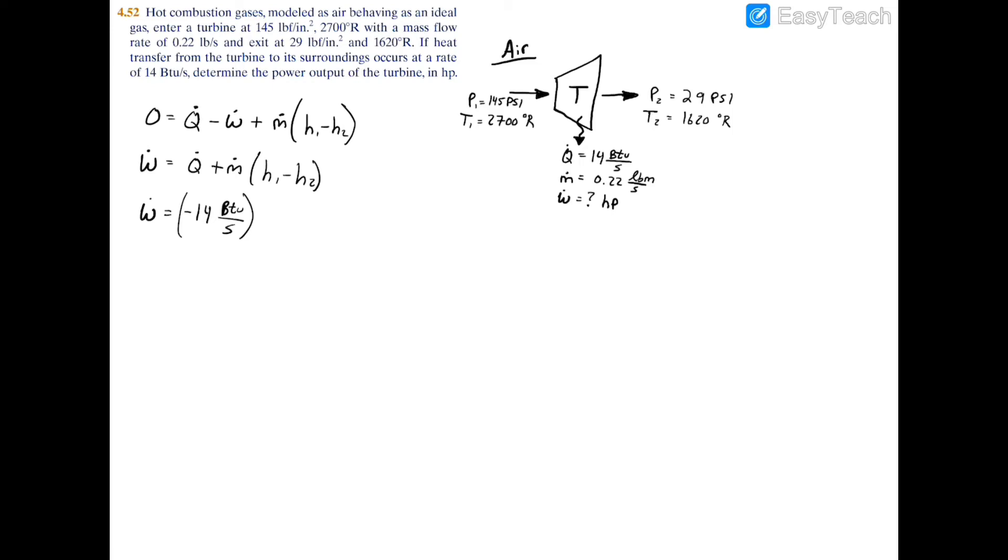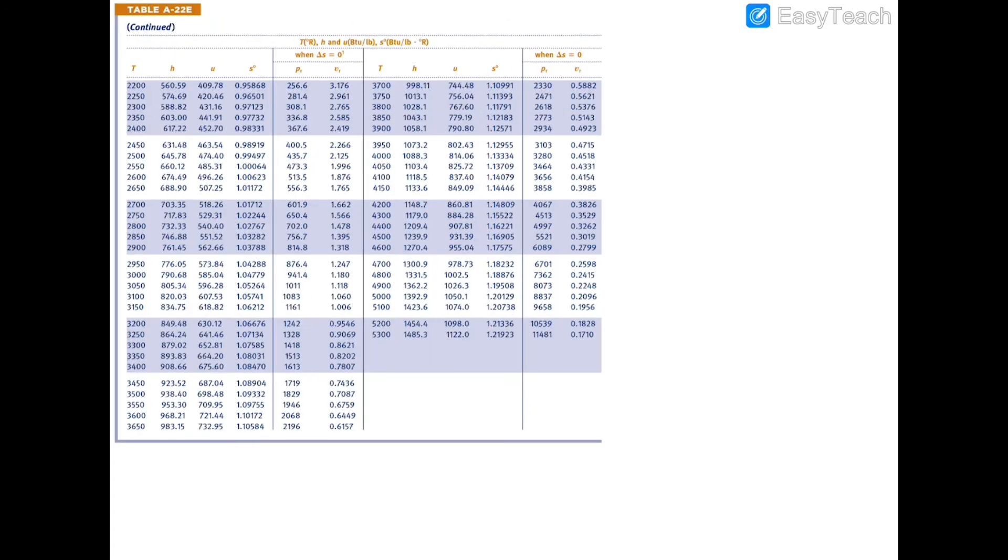Now we're going to have mass flow rate, which is 0.22, and that's pound mass per second. And now we're going to multiply that by the specific enthalpy. So to find h1, we have 2700 degrees Rankine. So if you go over to table A22E and we go to 2700 degrees Rankine, we have 703.35, and the unit for enthalpy is actually btu per pound.